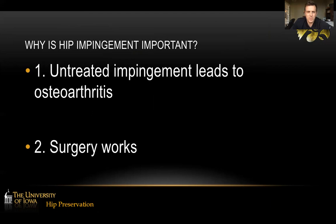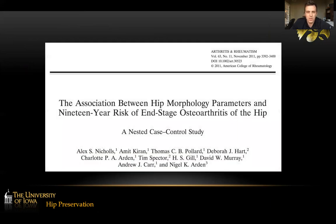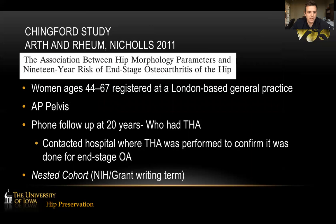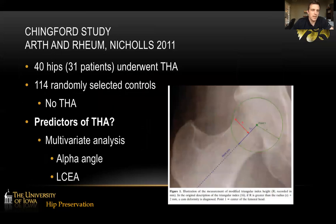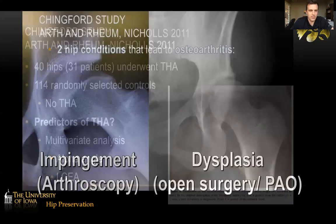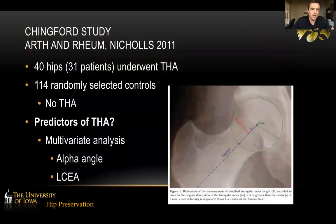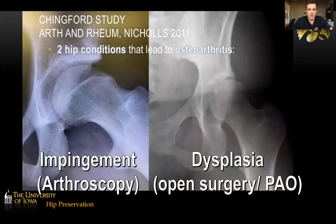We're going to discuss why hip impingement is important. I hope to convince you that untreated hip impingement leads to osteoarthritis and that surgery can be successful in appropriately selected patients. This is my favorite prospective study looking at risk factors for developing hip arthritis — a 20-year prospective study done in the British health system. They took x-rays of patients and followed up 20 years later to find who had hip replacement for end-stage arthritis. They found that the most common factors leading to hip arthritis were low lateral center edge angle or high alpha angle — basically impingement or dysplasia.